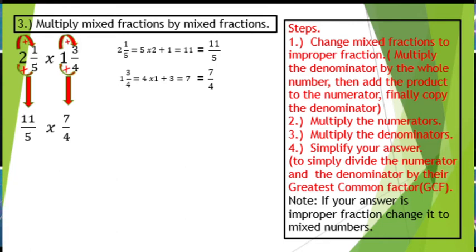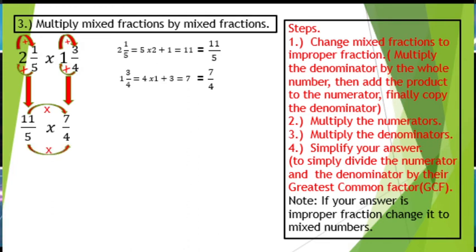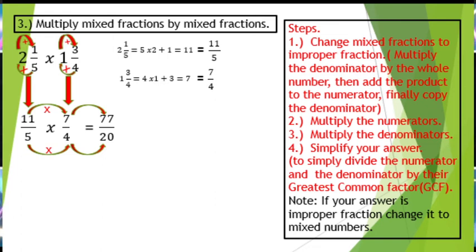So we have 11 times 7, then multiply also the denominators 5 and 4. So 11 times 7 equals 77, and 5 times 4 equals 20. Now, 77 over 20 is already in lowest terms.